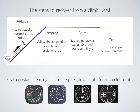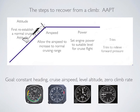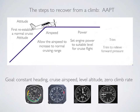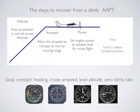You recover from a climb using the same mnemonic, AAPT. You start with attitude — pitch forward on the controls to go from your nose-up attitude back to the cruise attitude. Naturally, since we are still at full power, your airspeed is going to increase at this time, and that's good. Let it increase from 80 knots back up to 95 knots, assuming that's our target cruising airspeed. Once airspeed reaches 95 knots, you can reduce power to cruise power setting, usually around 2300 RPM for your training aircraft. Last, trim to relieve back pressure or forward pressure.